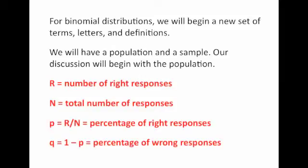For binomial distributions, we need a new set of terms, letters, and definitions. With a binomial distribution, we'll have a population and a sample. The population is the universe of every element of interest, and the sample is that portion of the population selected for our study. Here are some new terms: kappa R is the number of right responses — that's how many answers were right. N is the total number of responses.